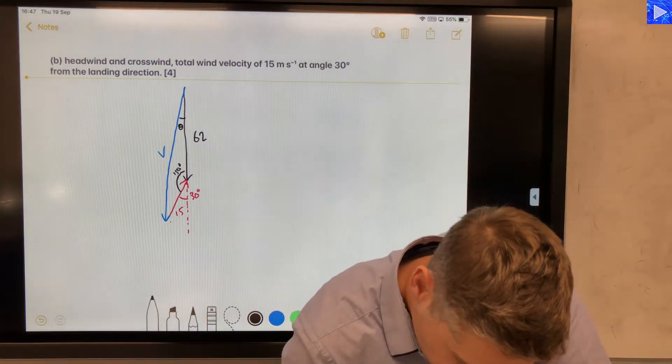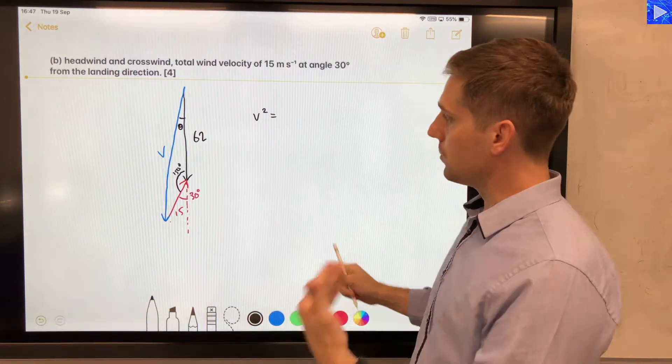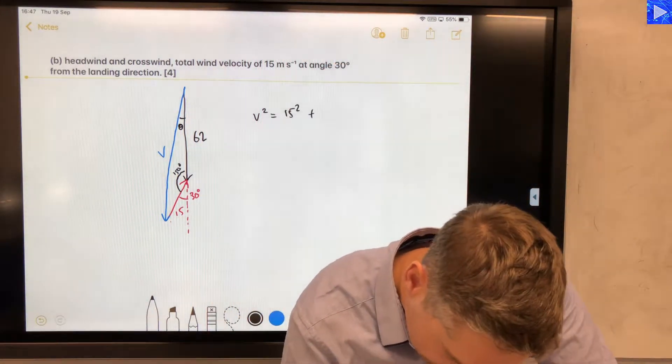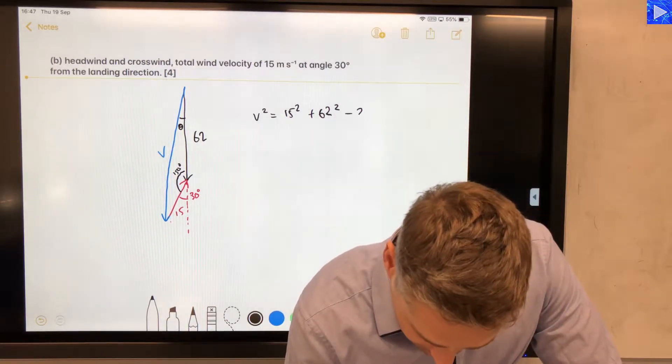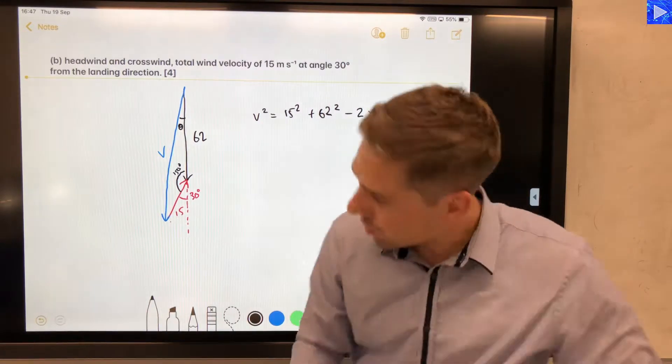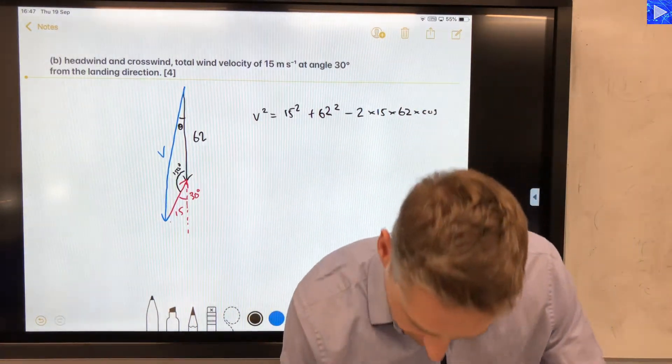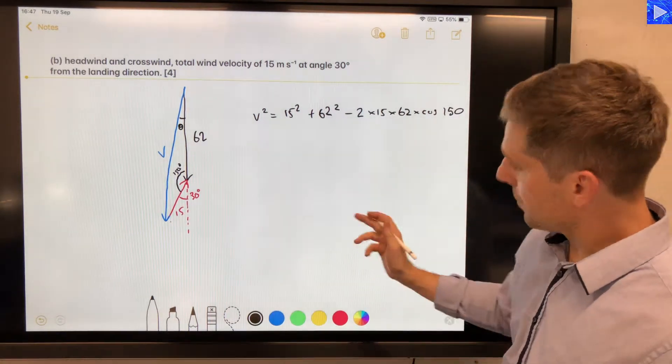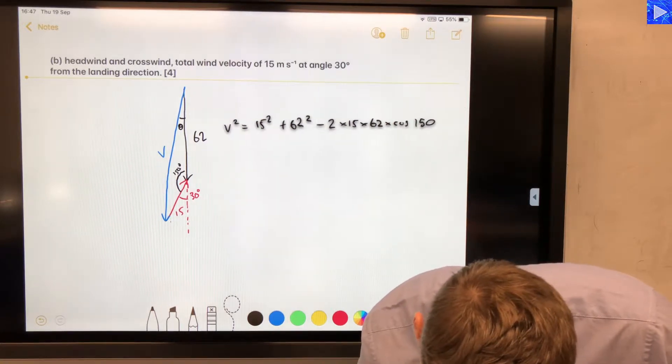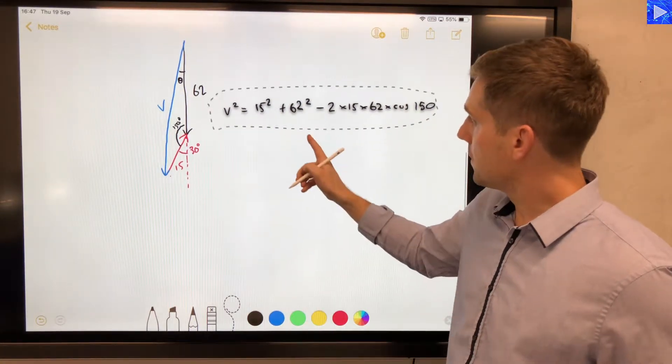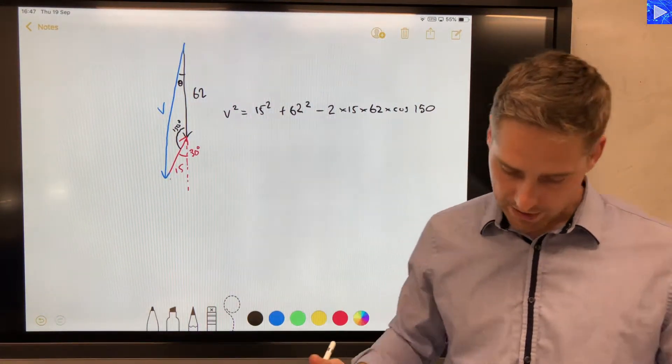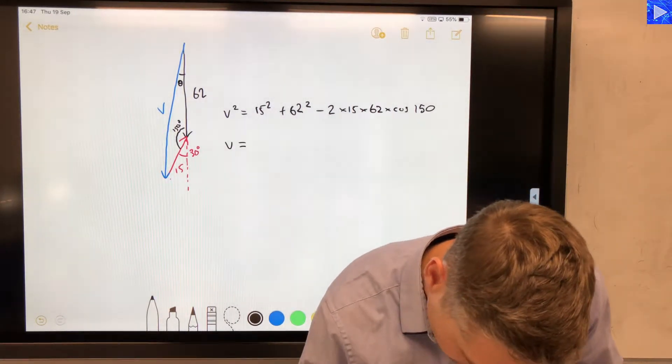Cosine rule tells us that V squared equals, so a squared equals b squared plus c squared. So that's the two sides, 15 squared plus 62 squared, minus two times the sides, 15 times 62, times cos of the opposite angle, which we know, 150. Okay, so hopefully we've got that all in there. Yeah, just about. I'm just going to drag that a little bit to the right so we can see that a little bit better. Okay, so let's put this into my calculator. And don't forget to square root all of that.